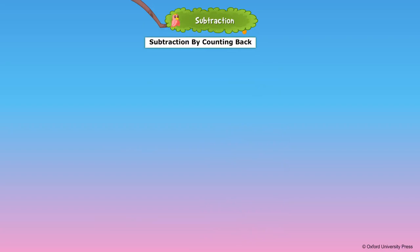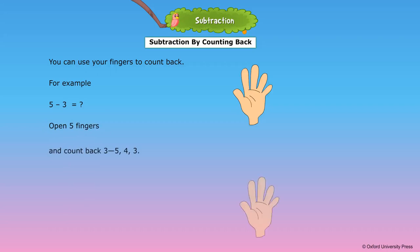Subtraction by counting back. You can use your fingers to count back. For example, 5 minus 3 is equal to dash. Open 5 fingers and count back 3.